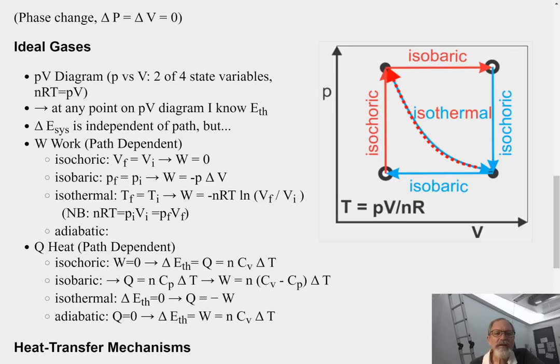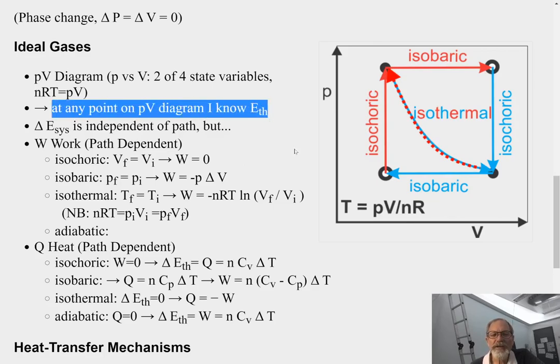I can follow in a closed system by knowing where I am in the system. I can also find the temperature and the temperature change. Therefore, at any point on the PV diagram, I know what E_th is going to be. I know how much thermal energy there's going to be. And I can get a change in thermal energy. Now, we know if I go from here to here, my total change in energy of a system is independent of path. It doesn't matter how I get there.